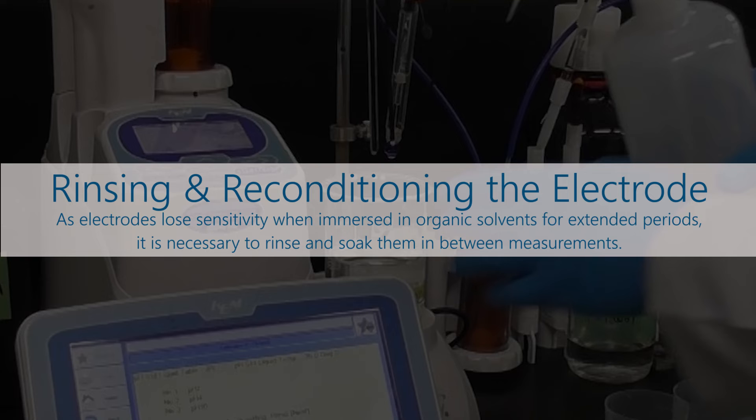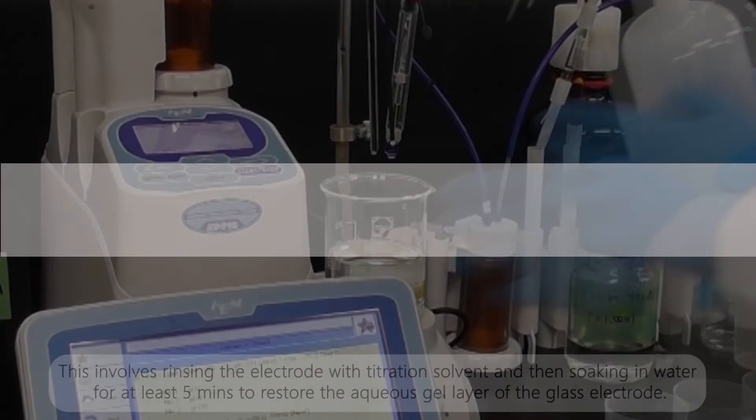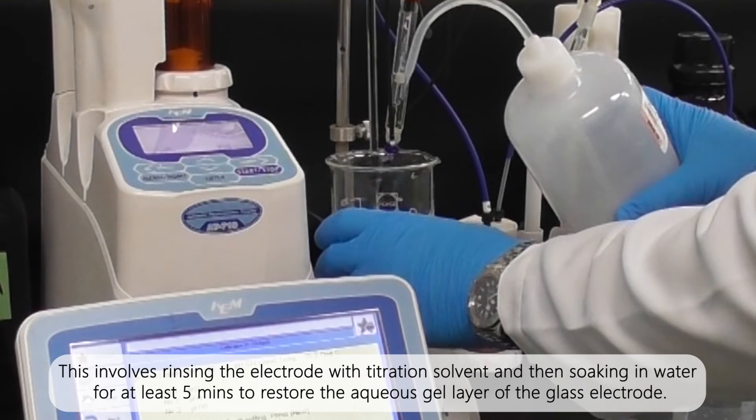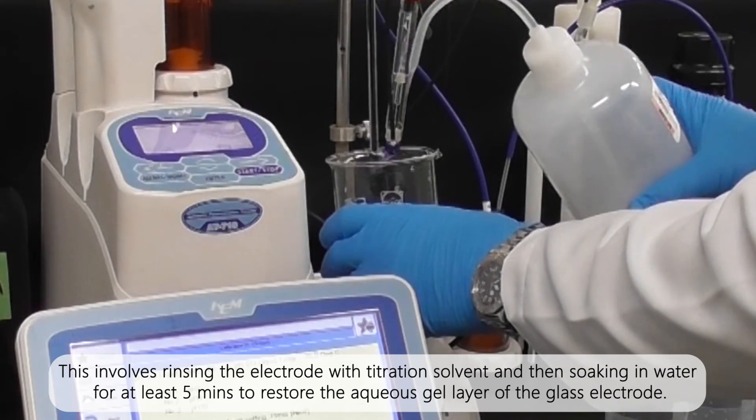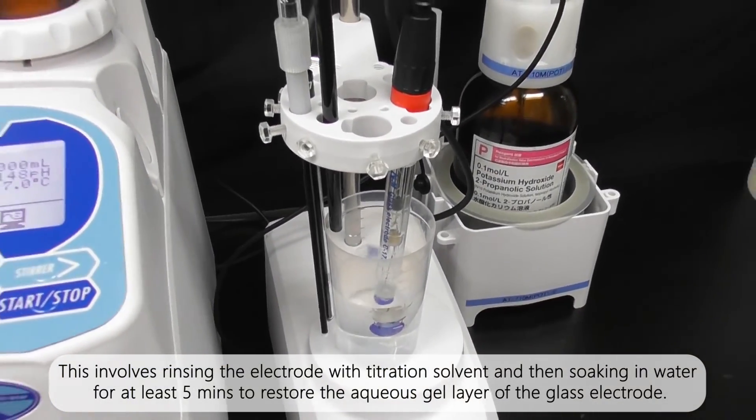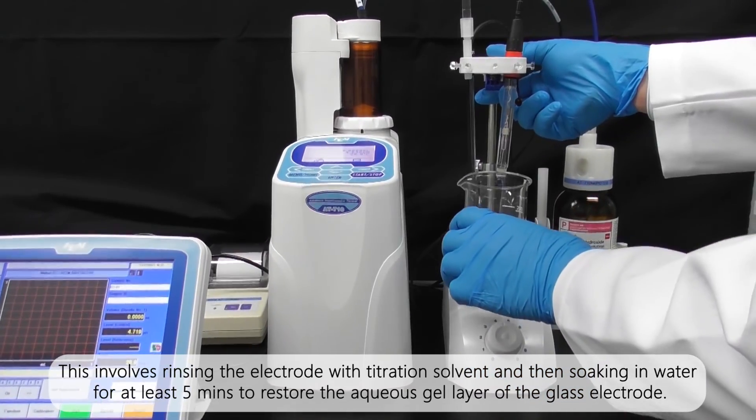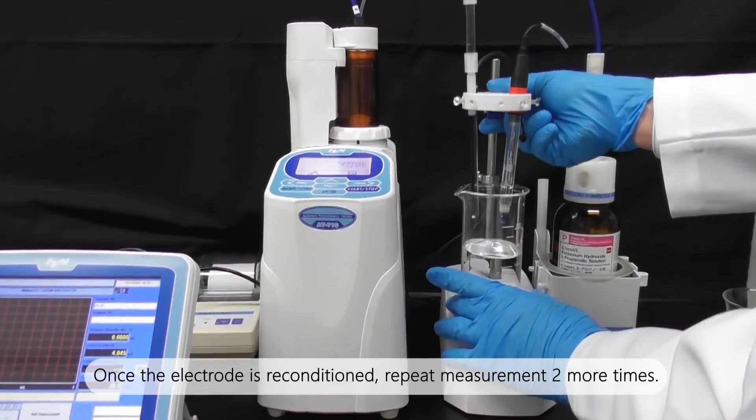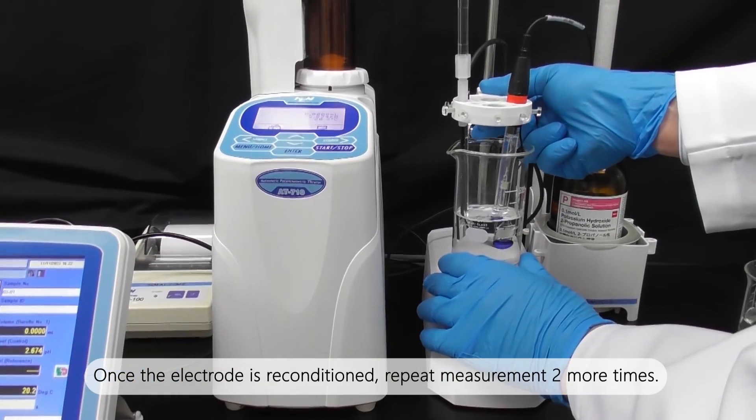Rinsing and reconditioning the electrode: As electrodes lose sensitivity when immersed in organic solvents for extended periods, it is necessary to rinse and soak them in between measurements. This involves rinsing the electrode with titration solvent and then soaking in water for at least five minutes to restore the aqueous gel layer of the glass electrode. Once the electrode is reconditioned, repeat measurement two more times.